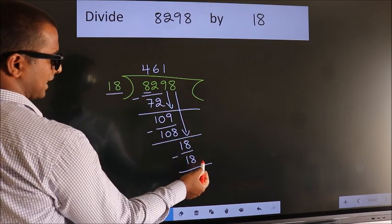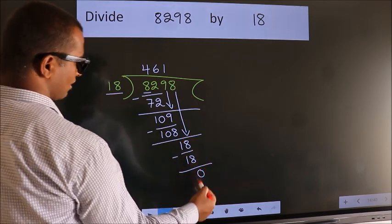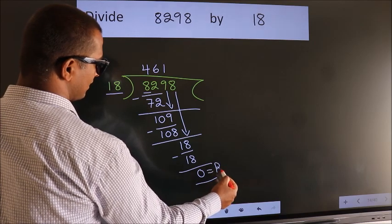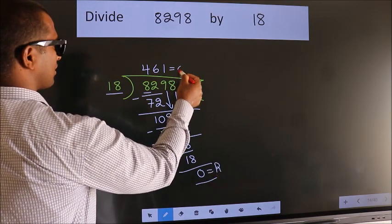No more numbers to bring down. So we stop here. This is our remainder. This is our quotient.